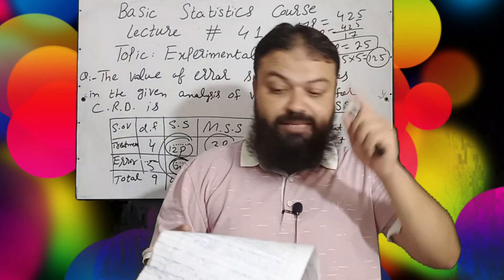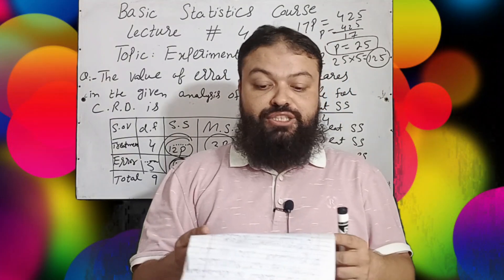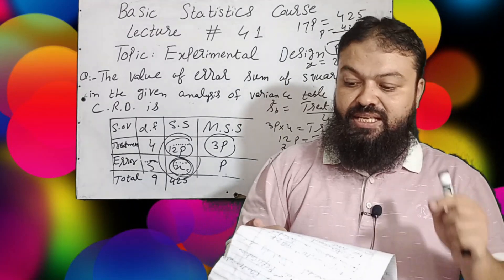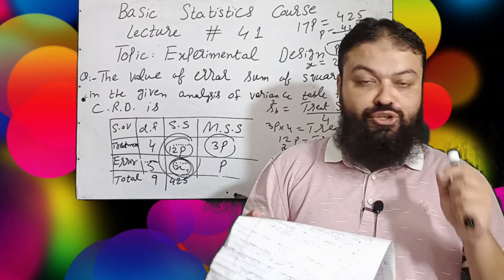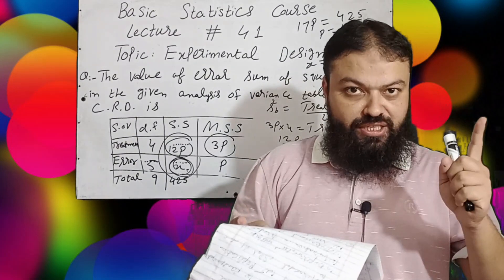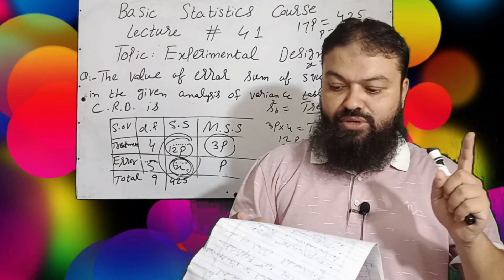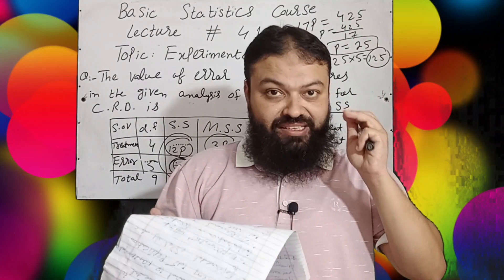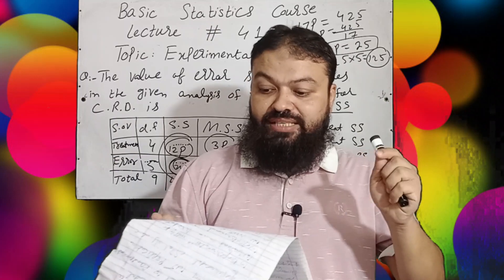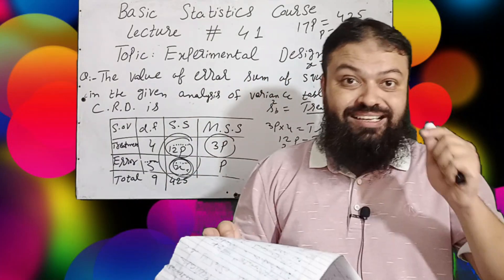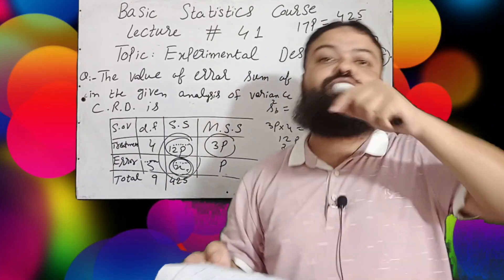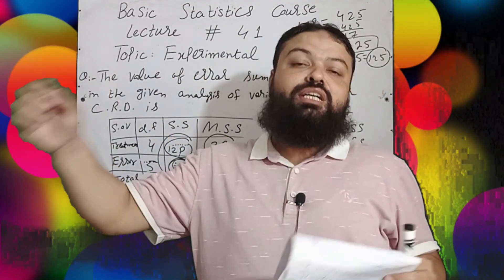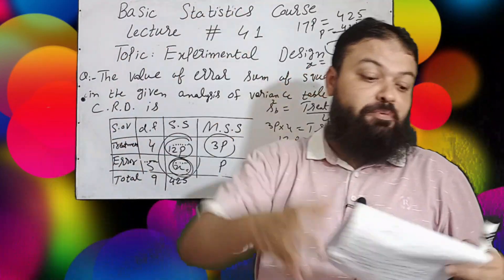Question number five, a very important one: To get an idea of the fertility conditions of a field, the method used is — a) local control, incorrect; b) replication, incorrect; c) randomization, incorrect; d) uniformity trials — that is the correct option. For checking the fertility of the fields, uniformity trials is the correct answer.